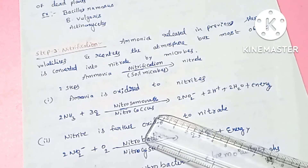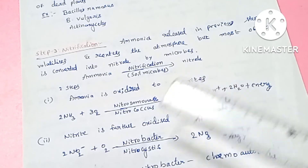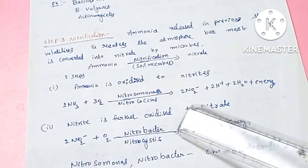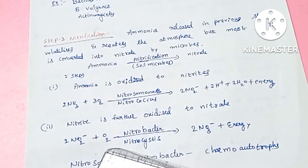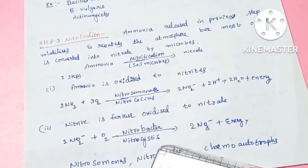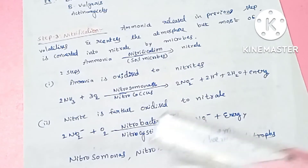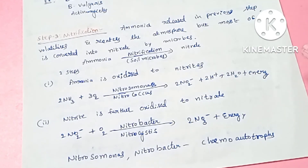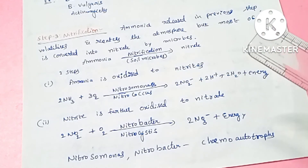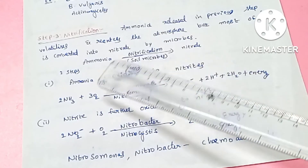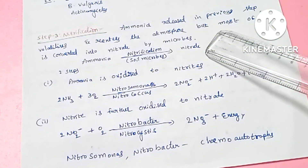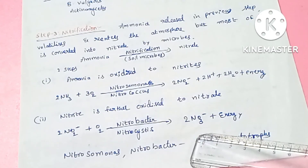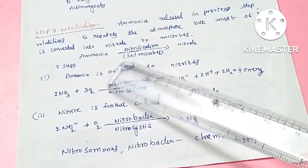Nitrosomonas bacteria are involved in the first step. Next, nitrite is oxidized into nitrate by bacteria Nitrobacter and Nitrocystis, and some amount of energy is released. Nitrosomonas and Nitrobacter are chemo-autotrophs — they use chemical substances as their energy source. So nitrification is the two-step process: first, ammonia is converted to nitrite, and second, nitrite is converted to nitrate, both being oxidation processes.